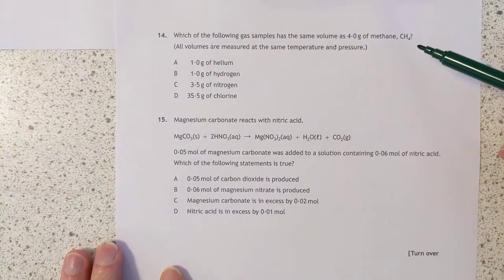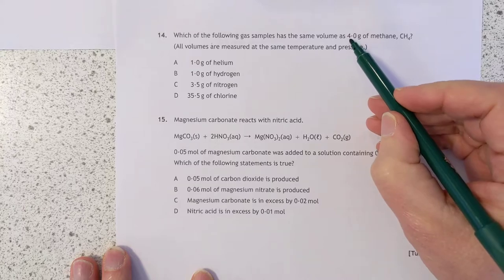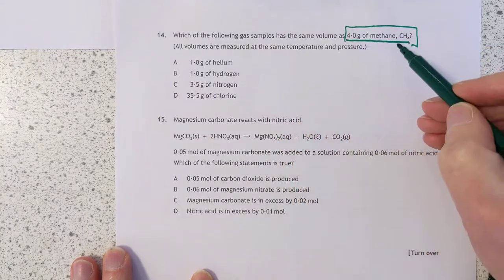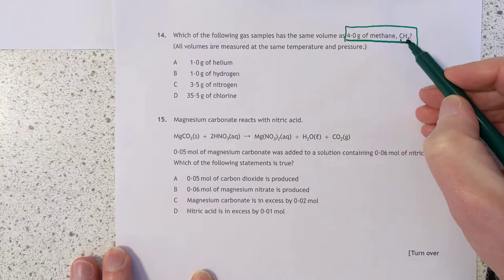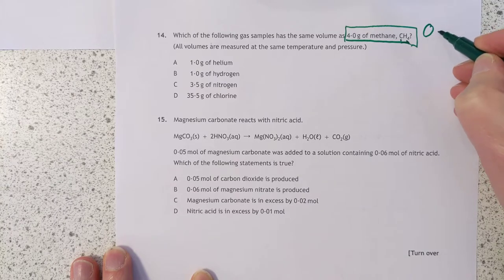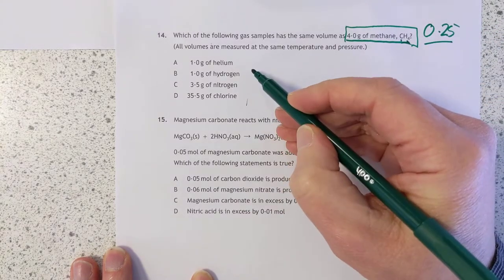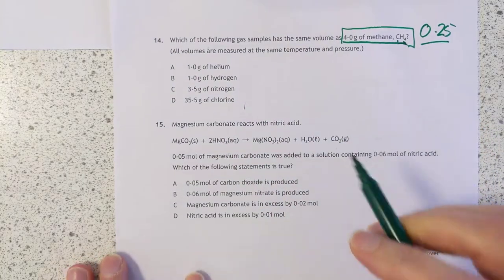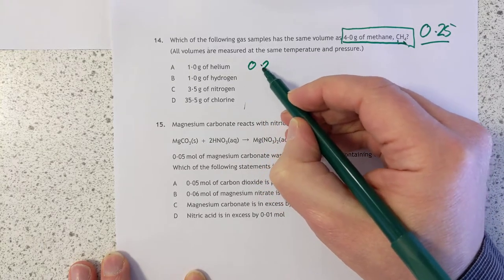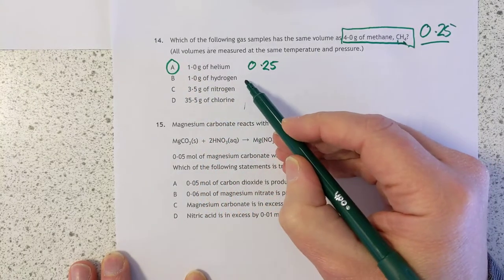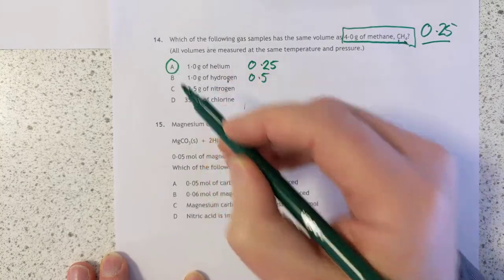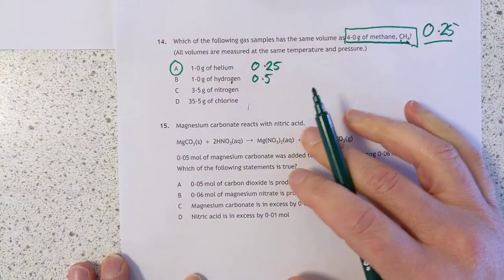Question 14: Which of the following gas samples has the same volume as 4 grams of methane? Classic SQA. What they actually mean is you're matching up one of these answers with the number of moles of methane gas. Methane is 12 plus 4 is 16. You've got 4 grams of it, so mass over GFM is quarter of a mole, 0.25 of a mole. One of these will also be 0.25 of a mole. 1 gram of helium, that is 1 over 4, that looks like 0.25. That looks like our preliminary answer. I'm not going to go any further. It's A.